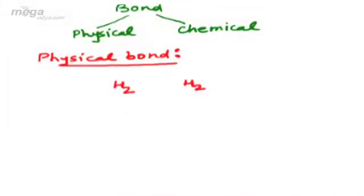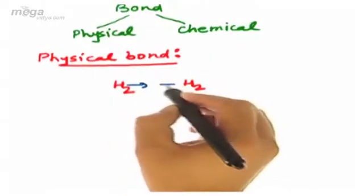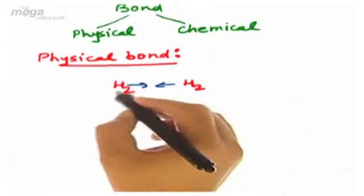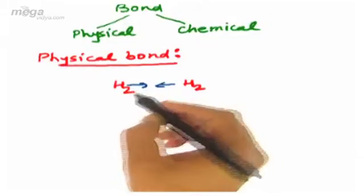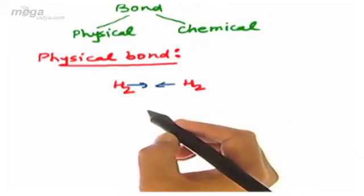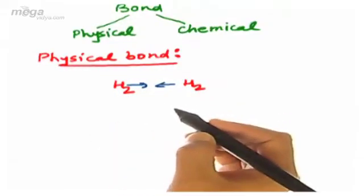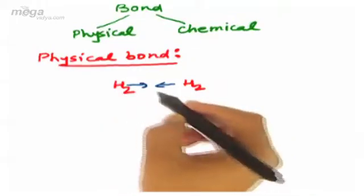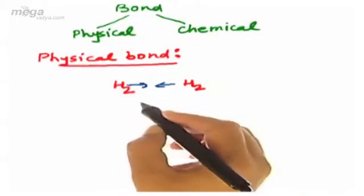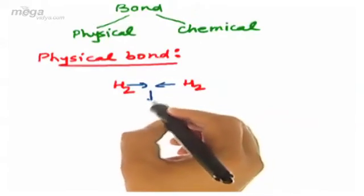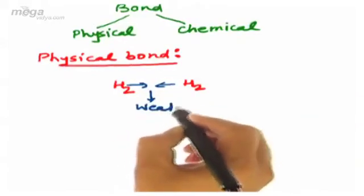When these two H2 molecules will be approaching each other for bonding, what we find is that these two molecules will not undergo any kind of electronic loss or mutual sharing. Rather, these two species or molecules will be held to each other through a weak force which we call as van der Waals force.